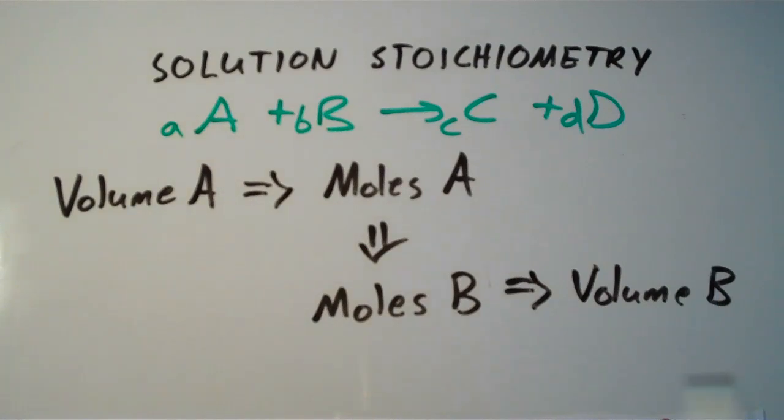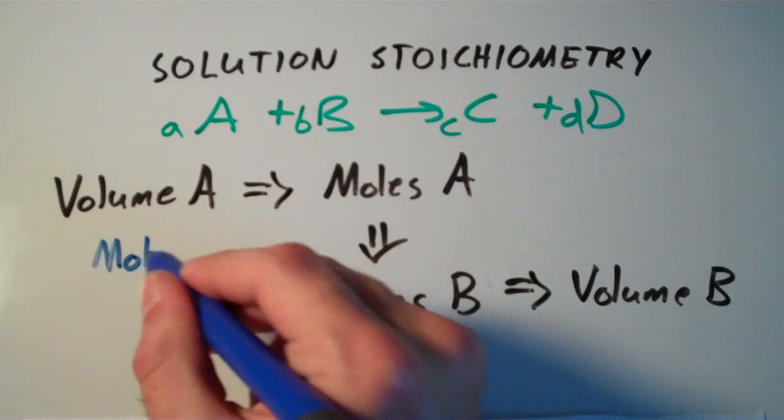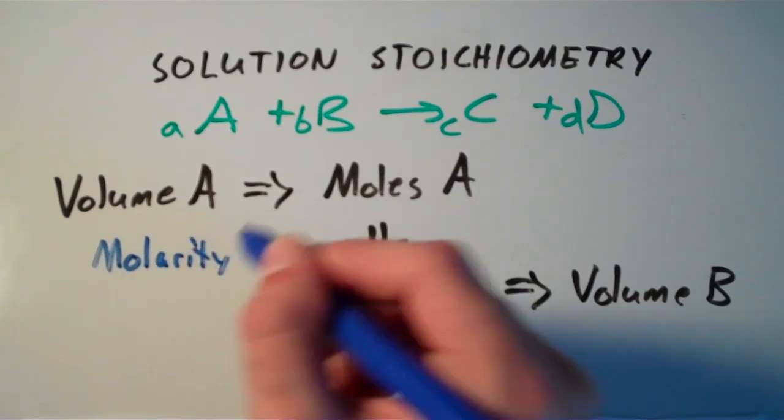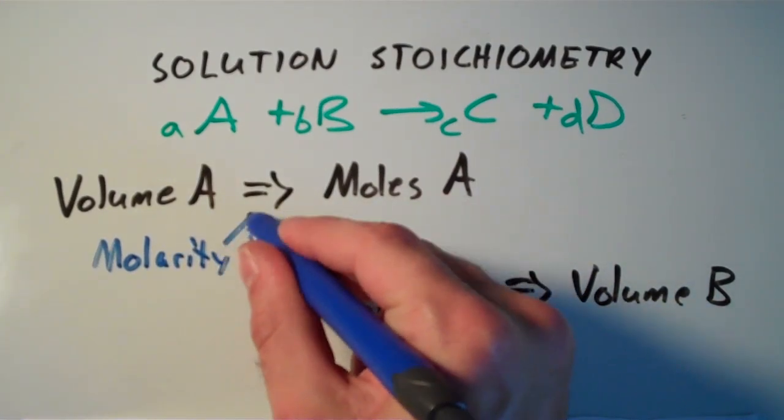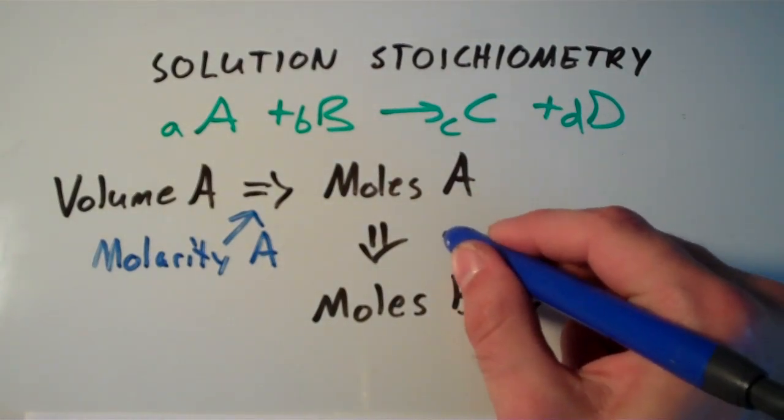If this equation is balanced, then I can carry out the following process. So if I have the volume of A, I can convert that into the moles of A using molarity of A. And then if I have the moles of A, I can convert that into the moles of B using the mole ratio.